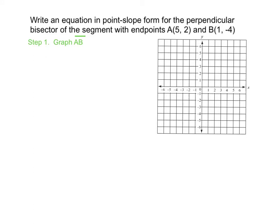Once we have a coordinate plane, we can graph our points. Let's start with point A at 5, 2 — so 1, 2, 3, 4, 5 over and 2 up. Then B is at 1, negative 4, so we can graph B. Then we can complete the segment. Now we have our segment that we want to find the perpendicular bisector to.